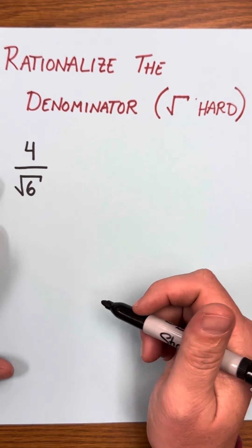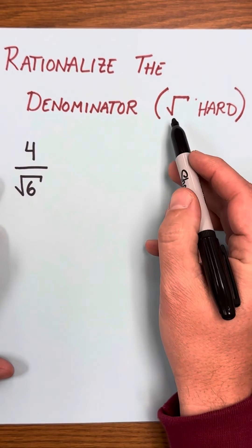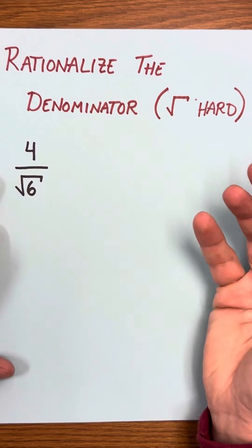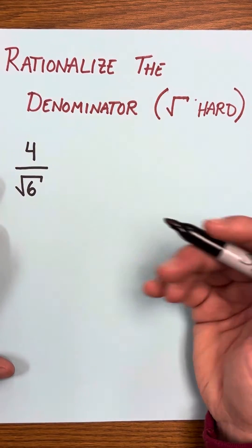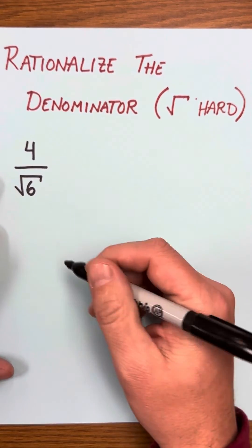Let's do a rationalize the denominator example involving a square root, but one that's just a little bit harder that has a little bit of simplifying at the end.